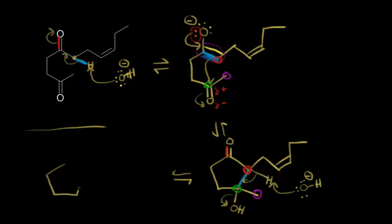Then you have your product. Drawing our product: a five-membered ring, a ketone here, a double bond here, retaining the stereochemistry of this group coming off, and then a methyl group. We had already formed a carbon-carbon bond in here, and these electrons in magenta move in to form your pi bond to give you your product. The product is called cisjasmone — it's found in jasmine flowers and gives them their scent. This is a pretty cool reaction: an intramolecular aldol condensation which gives you a product used in the perfume industry in a pretty good yield.